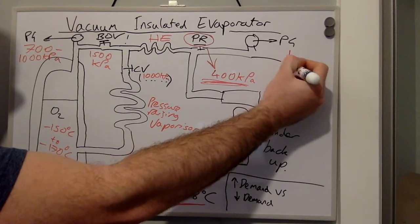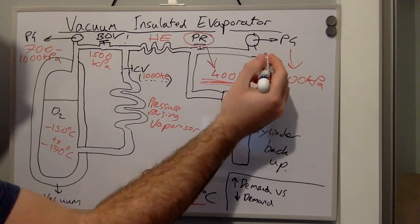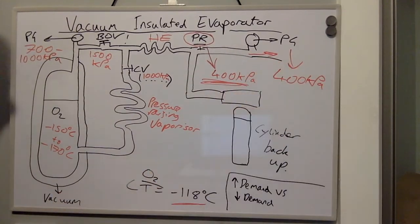This pressure gauge, as I just discussed, should read 400 kPa. And then the outflow of oxygen here leads directly into the pipeline. Thanks for watching.